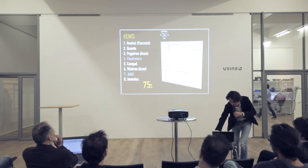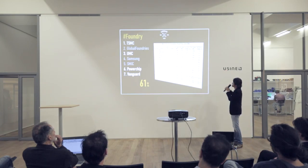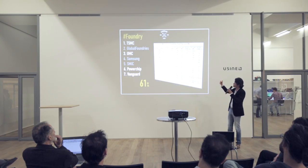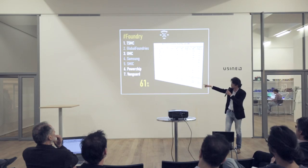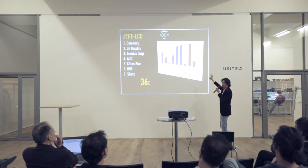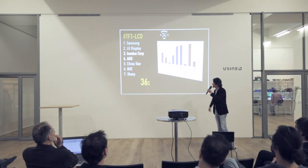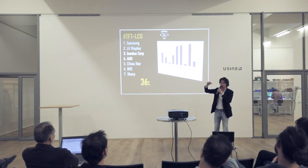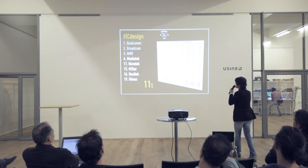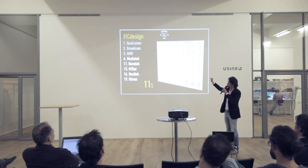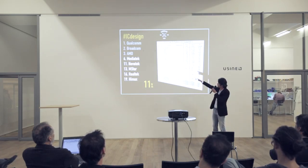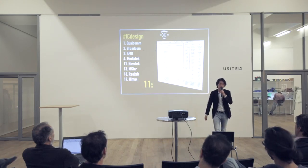For foundries, TSMC is the runaway winner. Number two is GlobalFoundries, spun off from AMD. Number three is UMC, a Taiwanese company. Taiwanese companies totally own 61% of the semiconductor foundry business. For TFT-LCD — a bad business to be in — number one is Samsung, number two LG, number three Innolux under Foxconn, number four AU Optronics. For IC design: number one Qualcomm, number two Broadcom, number three AMD. MediaTek is number four. Taiwanese IC design companies together own 11% of the overall market.